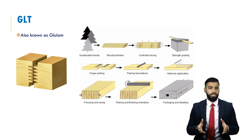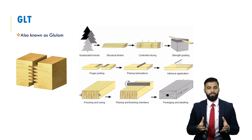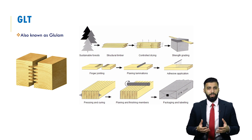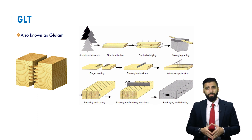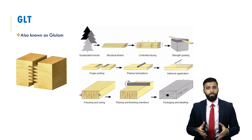Our next engineered wood product is GLT — glued laminated timber, also known as glulam. It is made by gluing together under heat and pressure laminates of timber. In terms of production, once timber is obtained from trees in the form of boards, you dry the boards, grade and classify them, join them using finger joints, plane the laminates to bring them to a uniform level, apply an adhesive, press and cure them, and finally plane them one last time before they are ready to use. This process enables large, long-length glulam members to be produced.